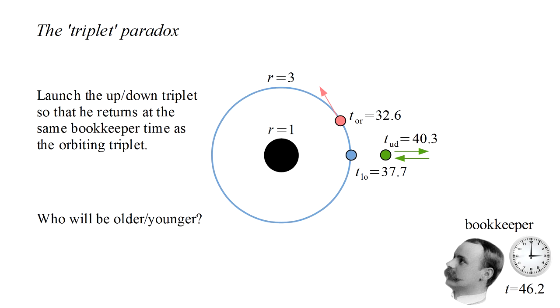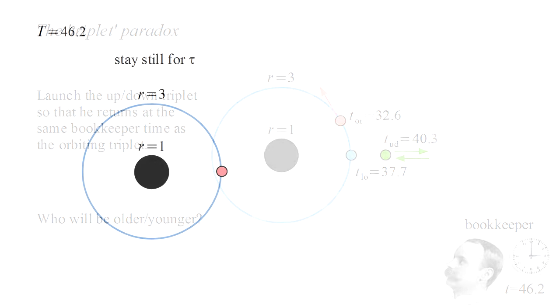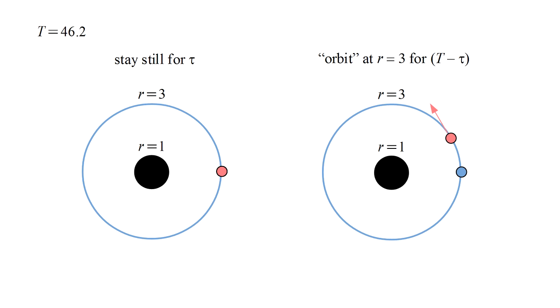In a similar fashion, we can show that the orbiting triplet's time of 32.6 seconds is also a local maximum. Suppose we have the clock stay still for tau seconds of bookkeeper time. Then it travels around the r equals 3 circle for the remaining t minus tau seconds. For non-zero tau, it will be going faster than it would in a natural orbit, so force will need to be applied to keep it on this path.